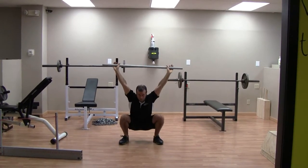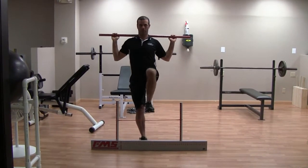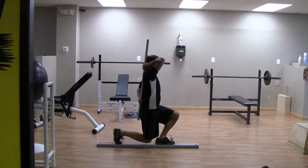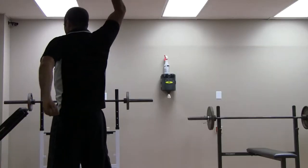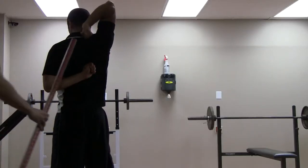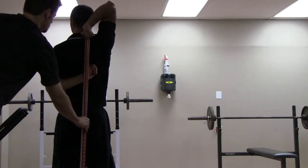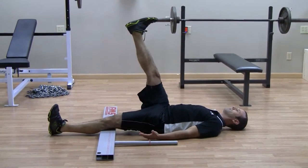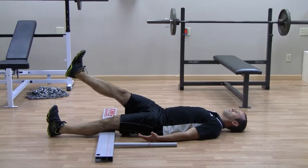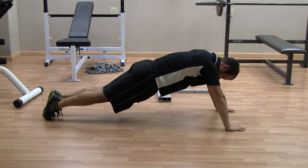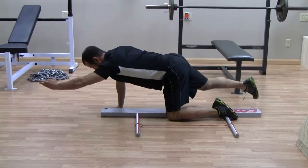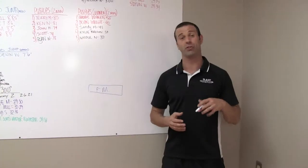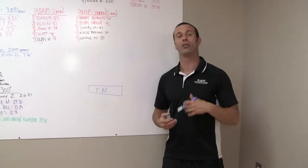I am certified in a system called the Functional Movement Screen, which may not look like much to the naked eye but speaks volumes about an athlete's mobility and stability. It is seven foundational patterns that tell us which qualities the athlete has or doesn't have. We take that data, interpret it, and use it when designing the athletic training program. Come in and I will screen any athlete for free — it's absolutely worth its weight in gold.